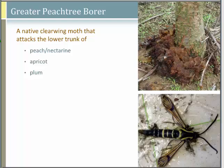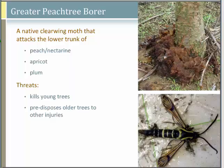Greater peach tree borer is identified by oozing down at the base of the tree. It's a clear-winged moth that looks like a wasp with black and yellow striping. It primarily attacks peaches and apricots — plums are rarely attacked. Young trees can be killed by greater peach tree borer; older trees would need many years of multiple attacks to be killed, but it can predispose them to other problems.